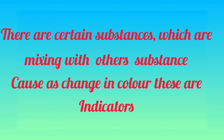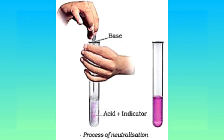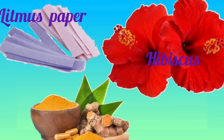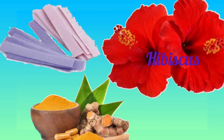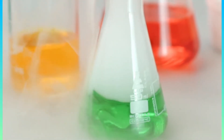We have a solution. There are certain substances which, when mixed with other substances, cause a change in color. These are called indicators. Indicators are used to identify whether a substance is acidic or basic. Some naturally occurring indicators are turmeric, litmus paper, and petals of china rose, which is also called hibiscus. We also have some synthesized indicators such as phenolphthalein, methyl orange, and bromothymol blue, etc.